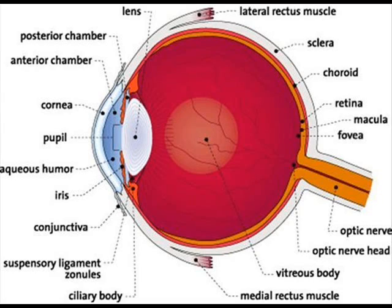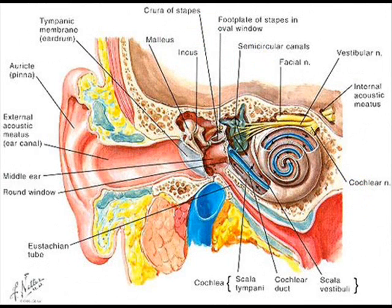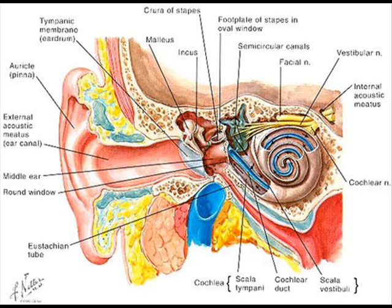The human ear is the organ of hearing and equilibrium. It detects and analyzes sound by transduction — the conversion of a sound wave into electrochemical impulses — and maintains the sense of balance and equilibrium. The human ear consists of three main parts: the outer ear, middle ear, and inner ear.